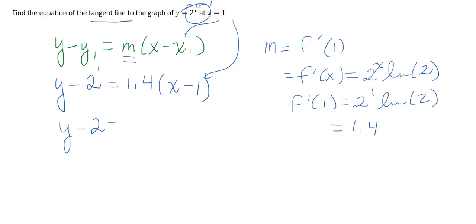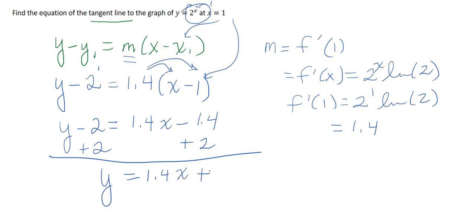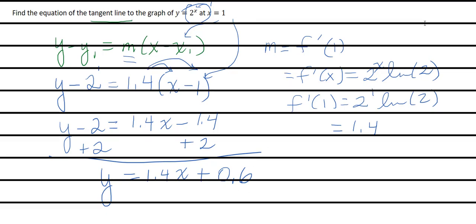And so, of course, 2 to the first is 2. And now I can distribute the 1.4 and then minus 1.4 and then add 2 to both sides to solve this for y. So y equals 1.4x plus 0.6. And that would be the actual tangent line at the point x equals 1.